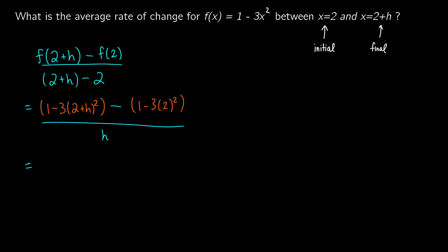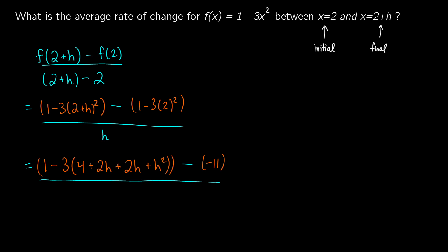Now we expand and simplify. For f of 2 plus h, wherever we see x we replace it with 2 plus h: 1 minus 3 times (2 plus h) squared. Expanding (2 plus h) squared gives 4 plus 2h plus 2h plus h squared. Then we subtract f of 2, which is 1 minus 3 times 2 squared. Since 2 squared is 4 and 3 times 4 is 12, f of 2 equals 1 minus 12 which is negative 11. All of this is divided by h.